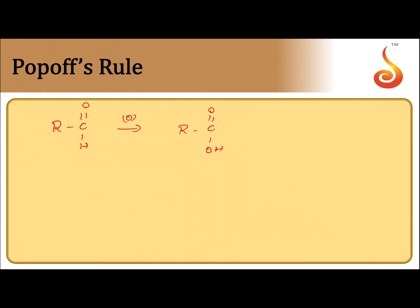The hydrogen atom on the carbonyl group is converted to an OH group without involving the cleavage of any carbon-carbon bond. So aldehydes are easily oxidized to carboxylic acids.